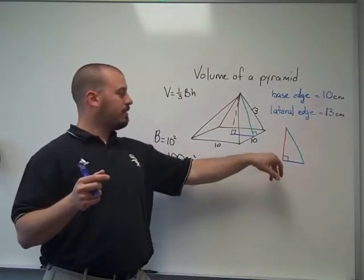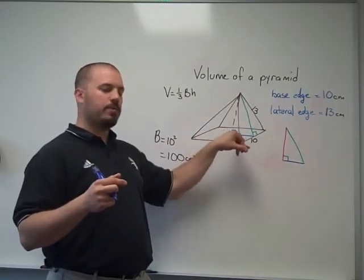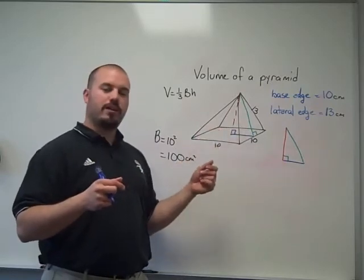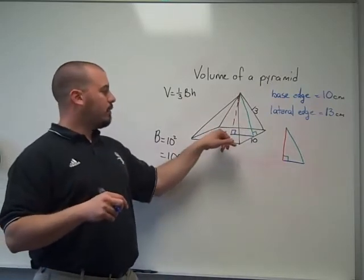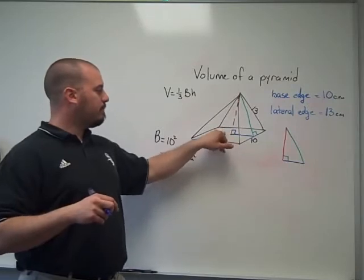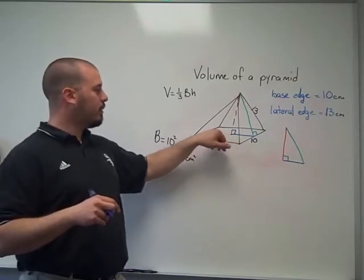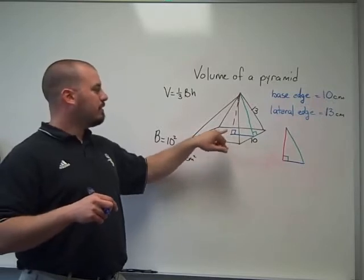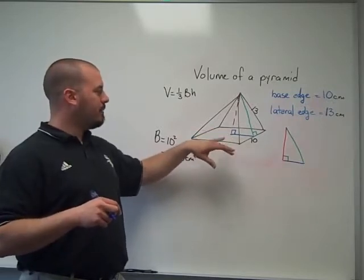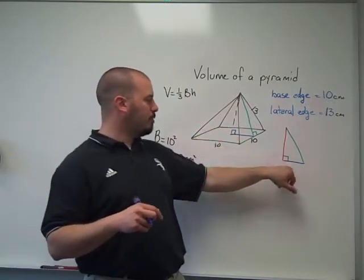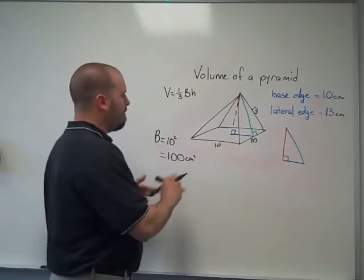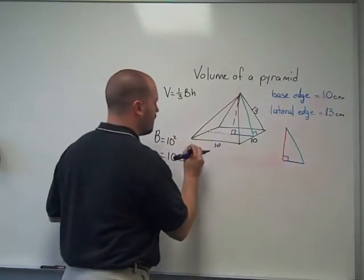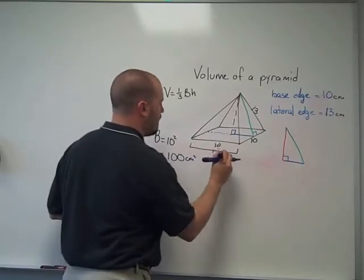And that triangle is a right triangle because the height is always perpendicular to the base. Since it's a regular square pyramid and a regular polygon for its base, and it's a right pyramid, that is hitting right at the center of the base. So I have enough information to label the blue. That would be half of the distance across.